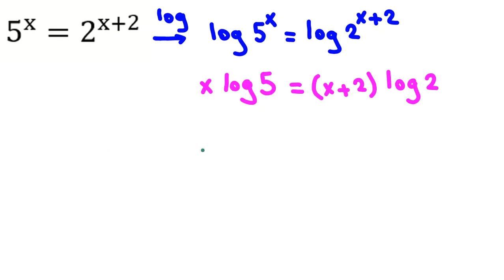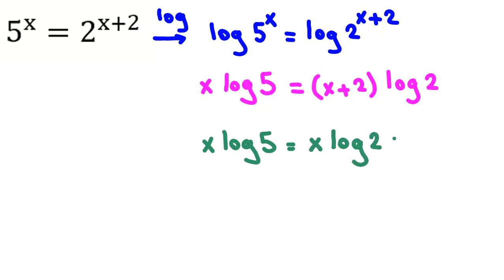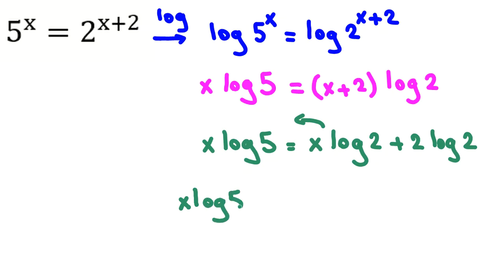Now we expand the right side: x log 5 equals x log 2 plus 2 log 2. Taking x log 2 to the left-hand side gives us x log 5 minus x log 2 equal to 2 log 2.